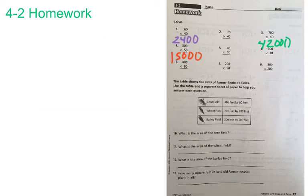Let's go down and look at our table, which is the data we're going to use for numbers 10, 11, 12, and 13 today. The table shows the sizes of Farmer Rubin's fields. Use the table and a separate sheet of paper to help you answer each question.